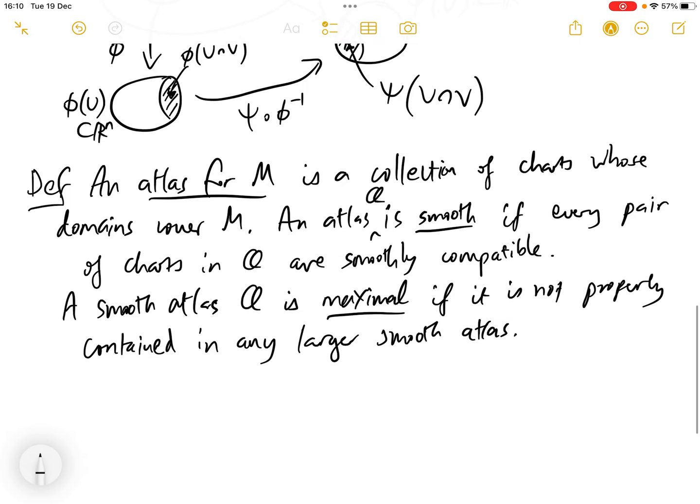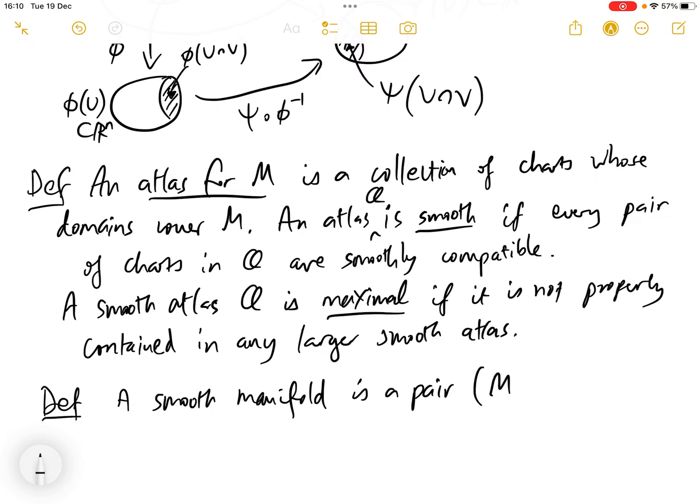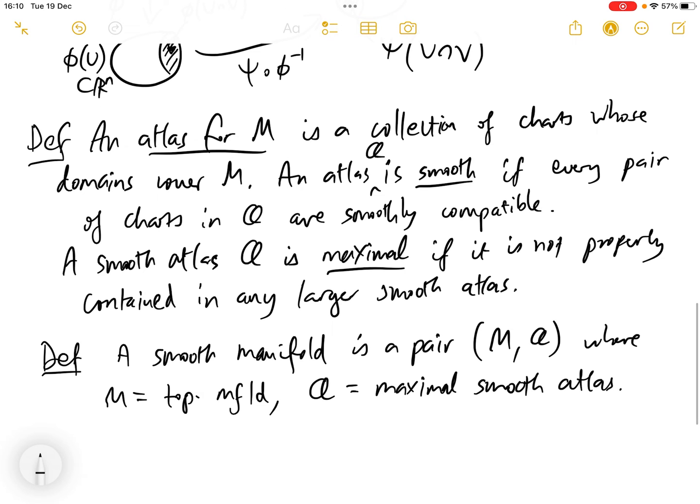So final definition, and this is what we've been building towards: a smooth manifold is a pair (M, A), where M is a topological manifold and A is a maximal smooth atlas. And we also say that instead of using the terminology maximal smooth atlas, this is also called a smooth structure on M.